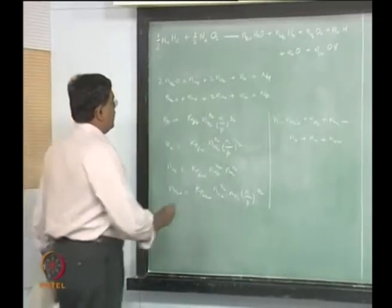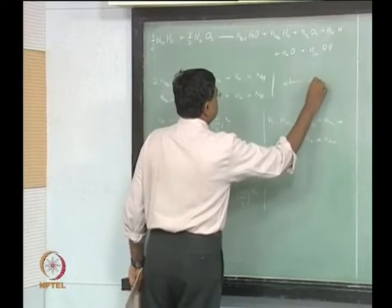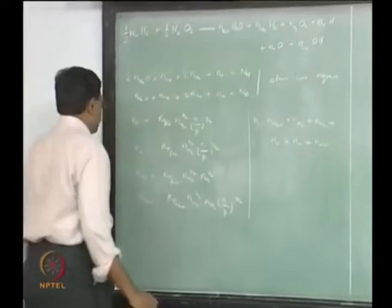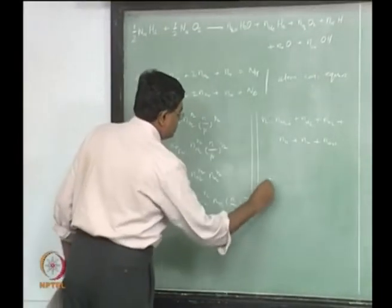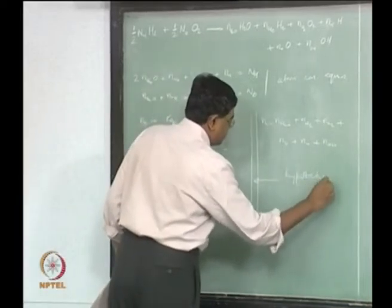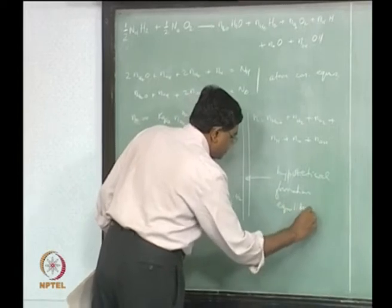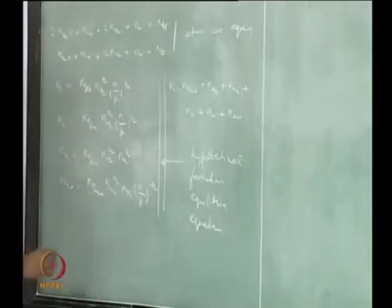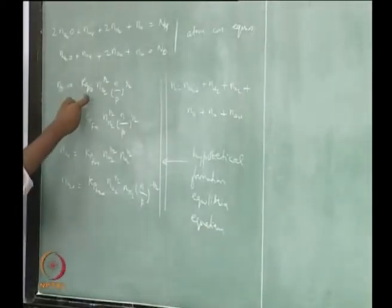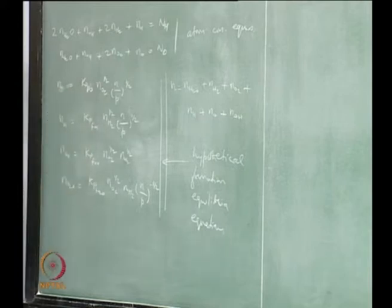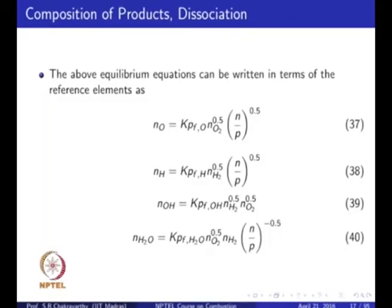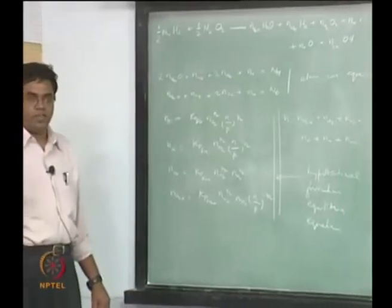These are the atom conservation equations, and these are the hypothetical formation equilibria equations. In the last class we wrote expressions for KPF_O, KPF_H, etc. We have now rearranged them to get expressions for NO, NH, NOH, and NH2O — each in terms of NO2 and NH2. So effectively we are recasting everything in terms of only the reference elements, which is the key.